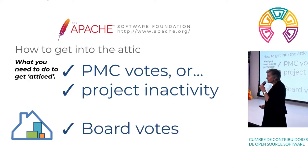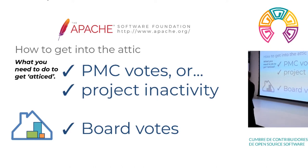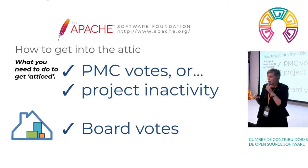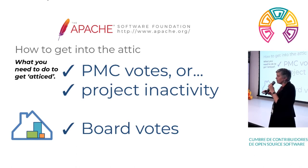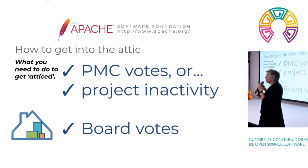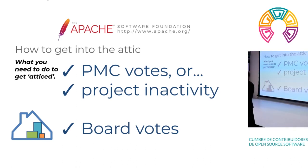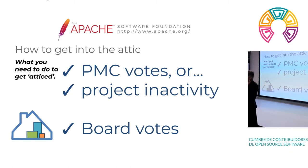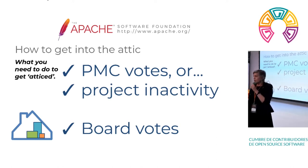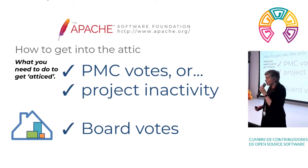So how does a project enter the attic? A project enters the attic from being a top-level project. A top-level project has a PMC — that's a Program Management Committee — that is responsible for the management of that project. The best way for a project to enter the attic is for the PMC to say, basically, we're done. They vote on it on the list, and if the vote goes through, they submit a resolution to the board, and the board asks that the attic take it on.